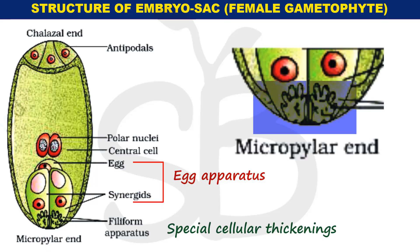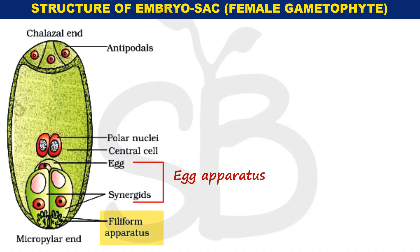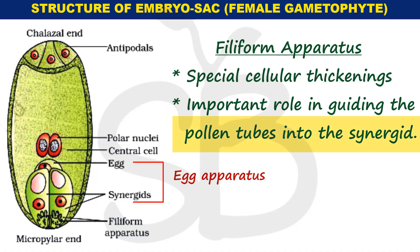All the synergid cells have finger-like projections, and the cellular thickening inside them is called the filiform apparatus. The filiform apparatus plays an important role in guiding the pollen tubes into the synergids.